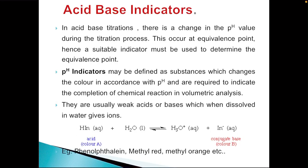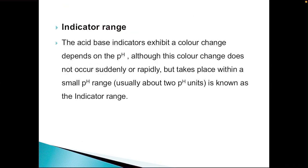Examples of pH indicators are phenolphthalein, methyl red, methyl orange, etc. Now we will see what is indicator range. The acid base indicators exhibit a color change depending on the pH.